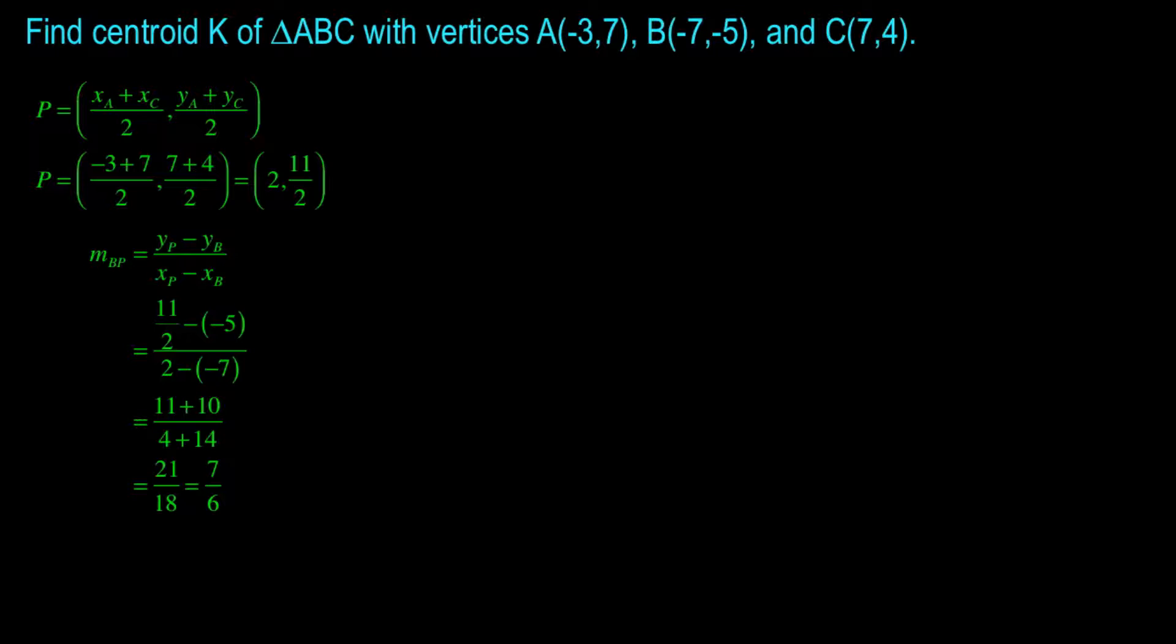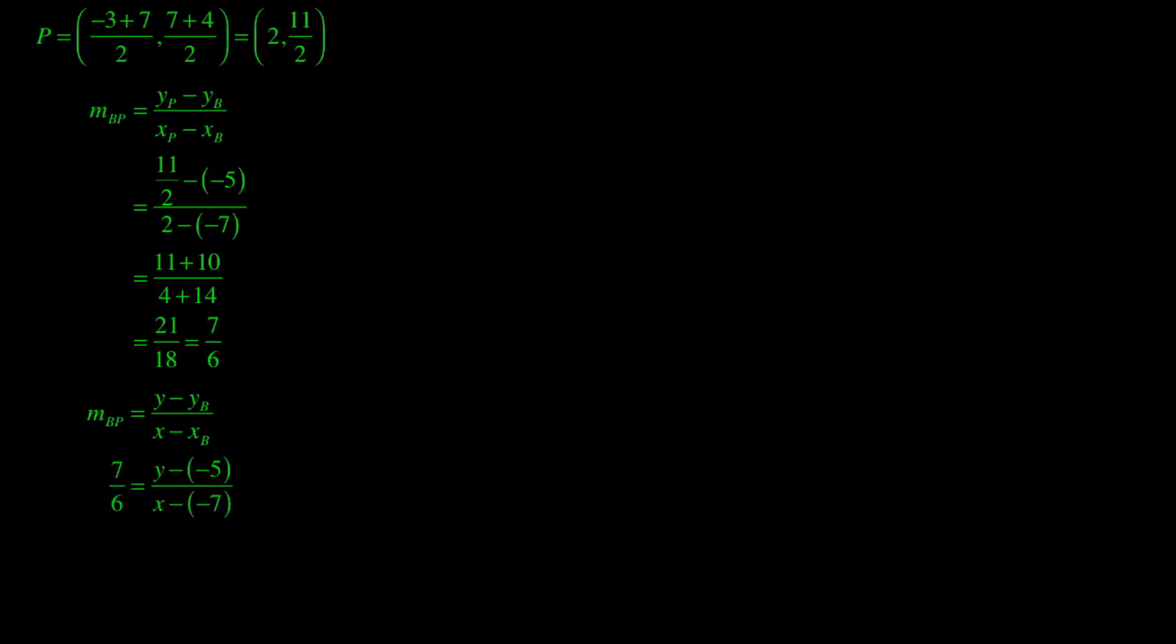With the slope of BP and my point-slope form of a line, I can find the equation of the line, and it goes something like this. 7 over 6 equals Y subtract negative 5 over X subtract negative 7. Cross-multiplying, I'd have 7 times X plus 7 equals 6 times Y plus 5. Expanding and simplifying, I get 7X plus 49 equals 6Y plus 30. Rearranging that equation, I get it in a form that is excellent for performing elimination.